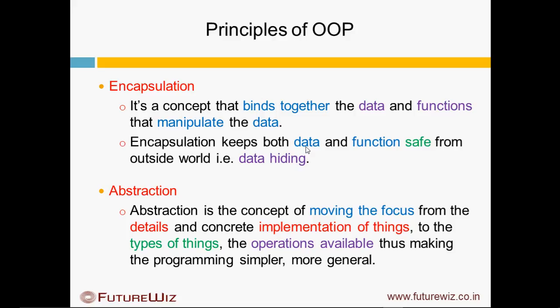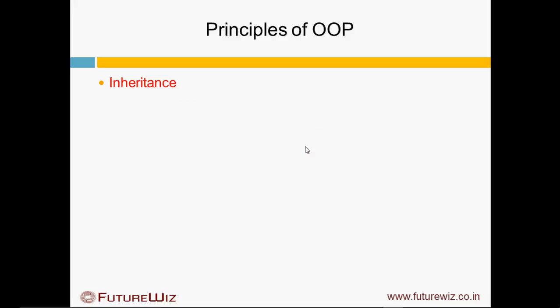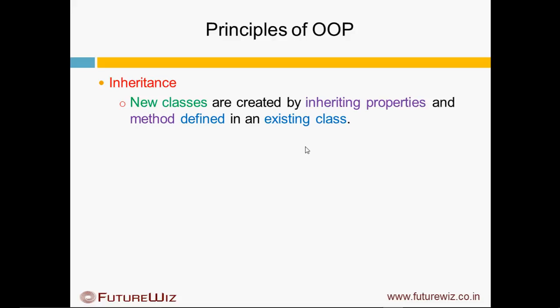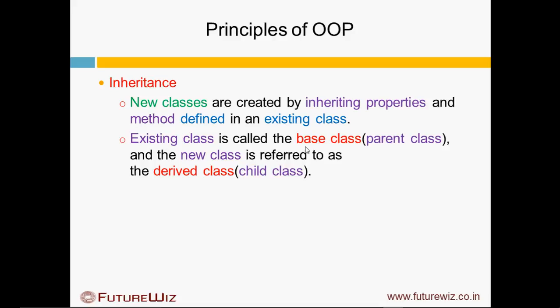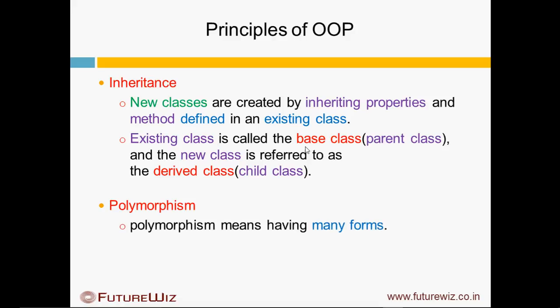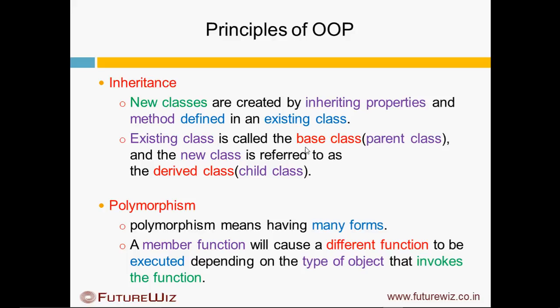Abstraction is the concept of moving the focus away from the details and concrete implementation of things. Inheritance allows new classes to be derived from existing classes. Existing classes are called base classes or parent classes, and new classes are referred to as child classes or derived classes. Polymorphism means having many forms — a member function can cause a different function to be executed depending upon the type of object that invokes that function.